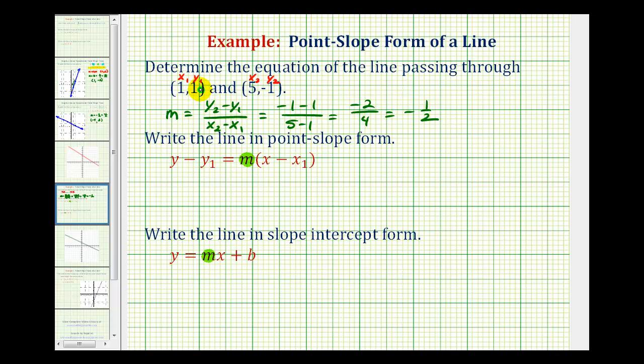If we use this first point where both coordinates are positive 1, we would have the equation Y minus Y sub 1, which is 1, equals the slope negative 1 half times X minus X sub 1. X sub 1 is also 1. So this would be the equation in point-slope form using the first point.